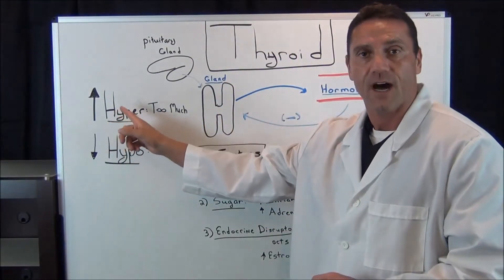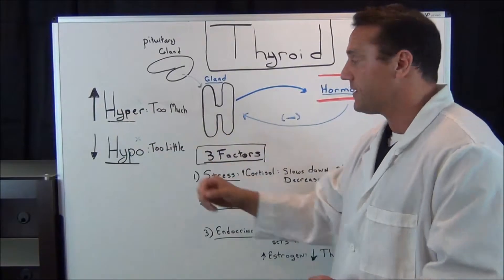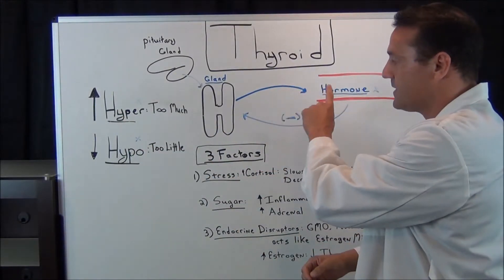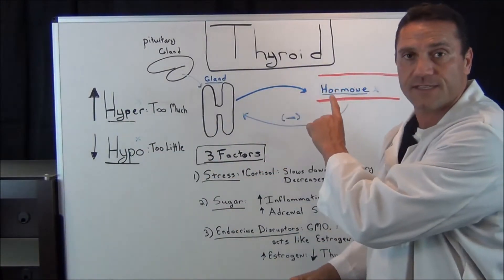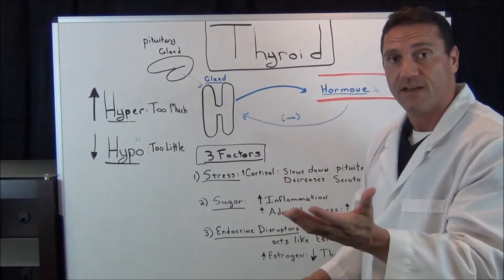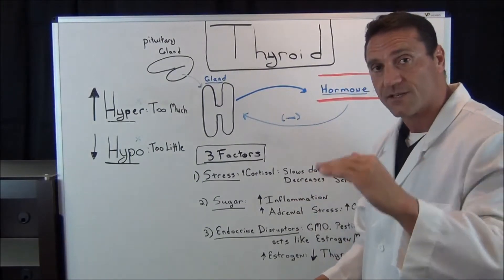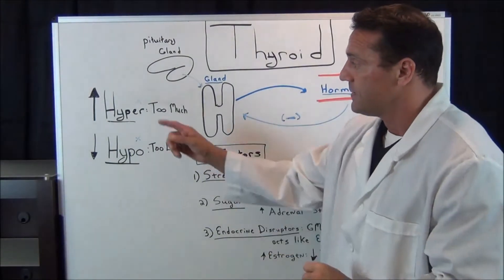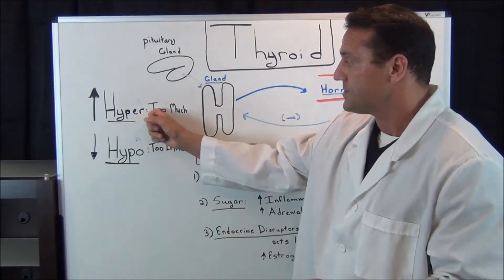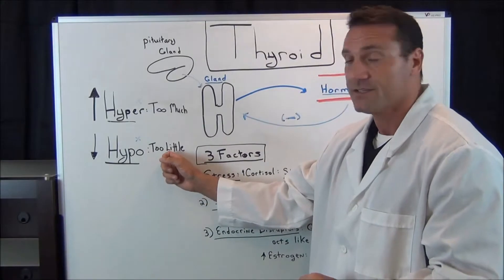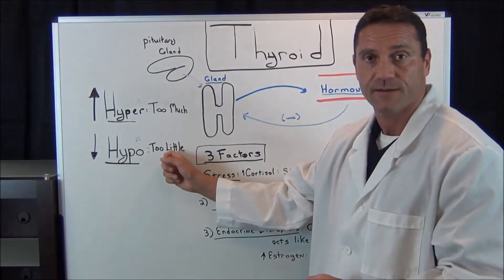These factors will first speed the thyroid up, because when there's a decrease of levels in the system, it's going to speed up — and eventually it's going to crash down. So hyper is too much first, and then eventually it's going to be hypo — too little.